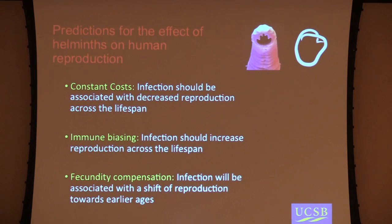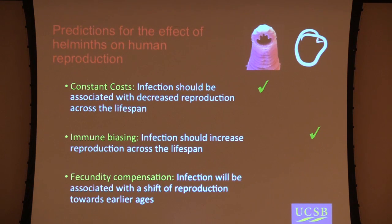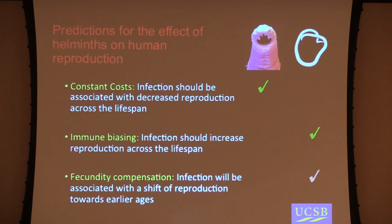Looking at our predictions: constant costs — we seem to see that with hookworm infection. But with roundworm infection, we see things more consistent with immune biasing, where interbirth intervals are shortened, possibly suggesting increased chances of conception, and possibly something that looks like fecundity compensation — although typically with fecundity compensation we'd expect to see more costs later on, and it's not necessarily clear whether we're seeing those costs. But the effects are much stronger earlier on.